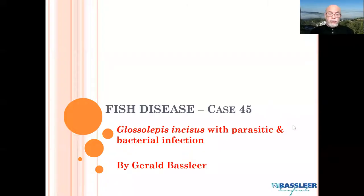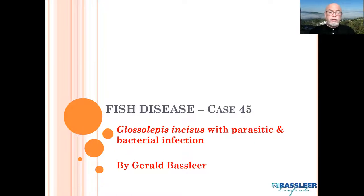Hello Acarist. Today we will discuss our fish disease case number 45. Here we will discuss a parasitic and a bacterial infection — a combined infection on a Glossolepis incisus, which is the red rainbow.